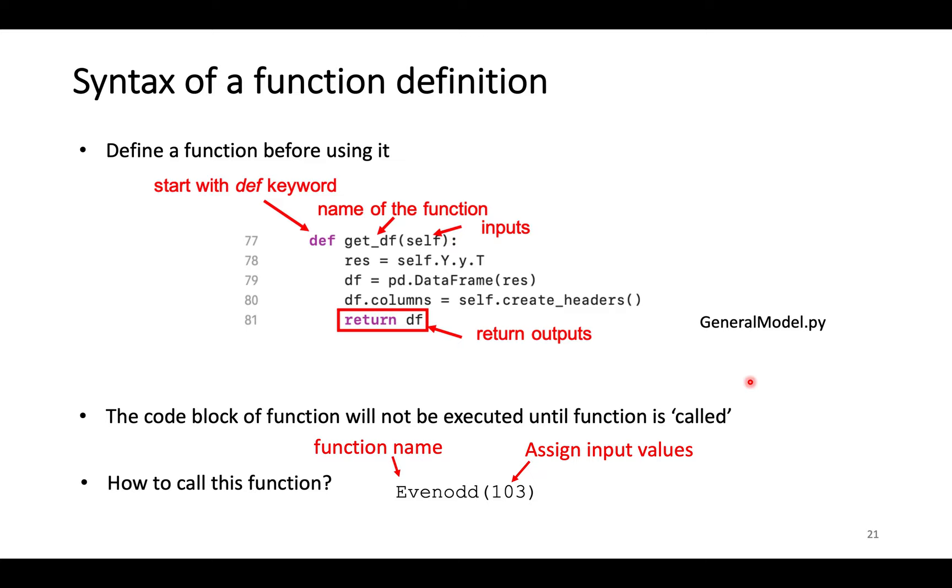This slide is to describe the syntax of function definition from general model Python file. The definition starts with def keyword. The function name is designed by your own. The value of inputs need to be assigned when the function is called. The expression with return keyword is to return outputs to the upper program, which calls this function.